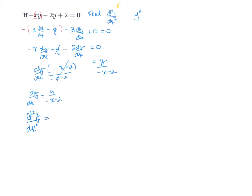And on this side, since we have a function over a function, we're going to use the quotient rule, which is low times the derivative of the high. So the derivative of y is dy/dx minus high times the derivative of low, which is -1, all over low low: (-x - 2)².